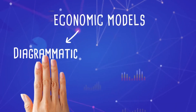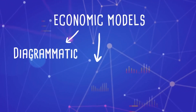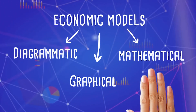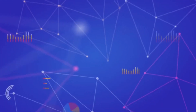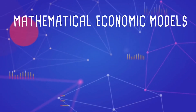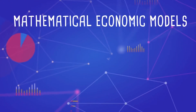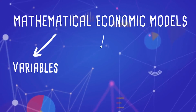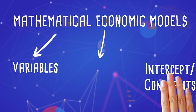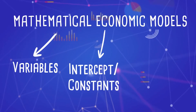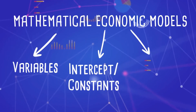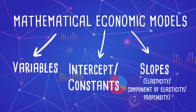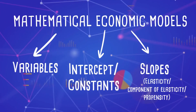Economic models may be diagrammatic, graphical or mathematical. Mathematical economic models have three components: variables, intercepts or constants, and slopes. Slopes generally represent the elasticity component of elasticity or propensity.